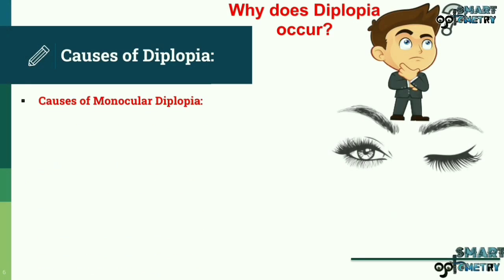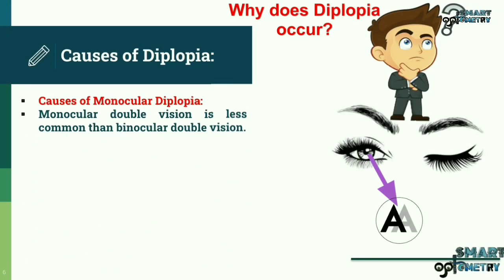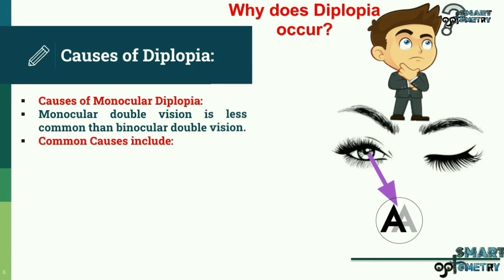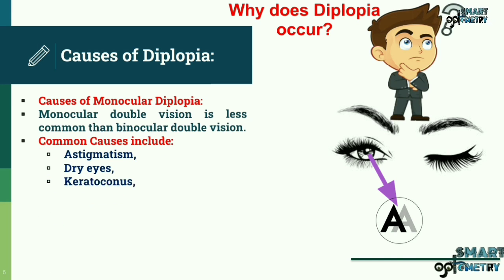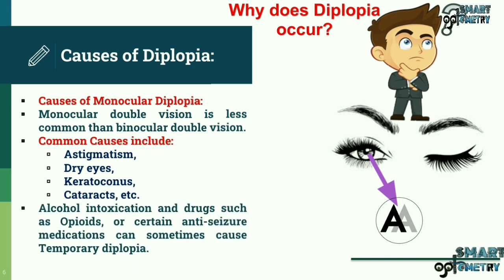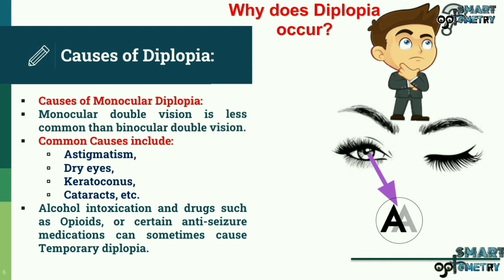Monocular double vision is less common than binocular double vision. Common causes include astigmatism, dry eyes, keratoconus, cataracts, and others. Alcohol intoxication and drugs such as opioids or certain anti-seizure medications can sometimes cause temporary diplopia.